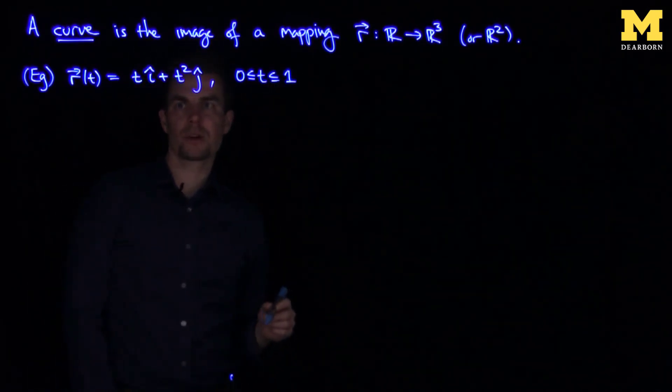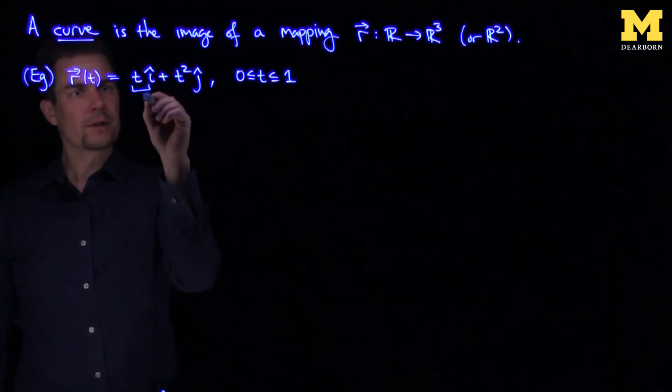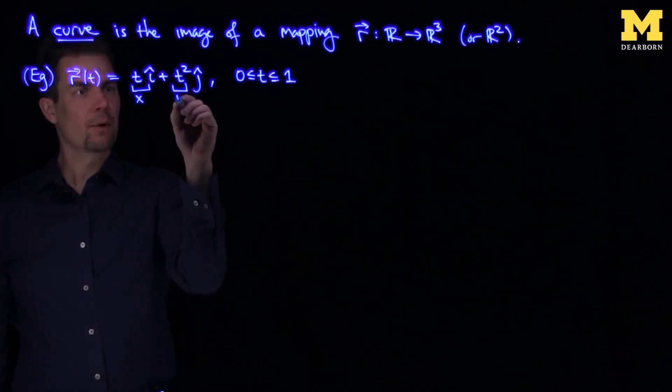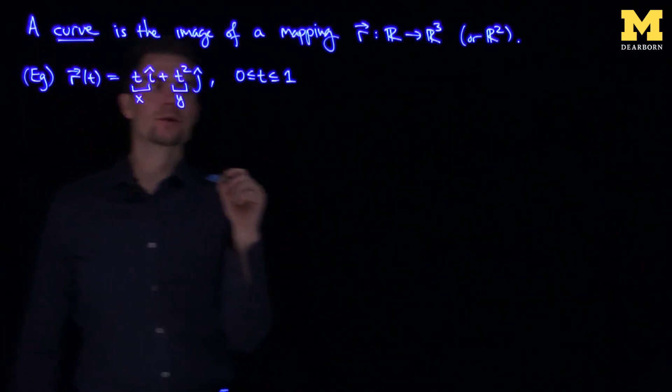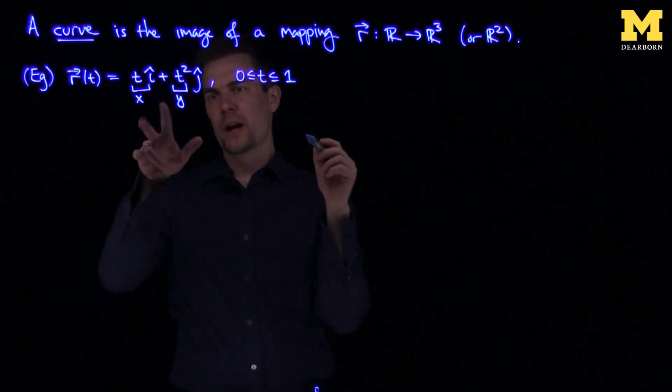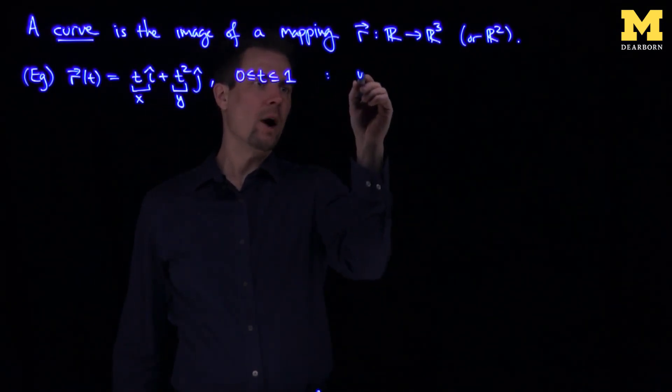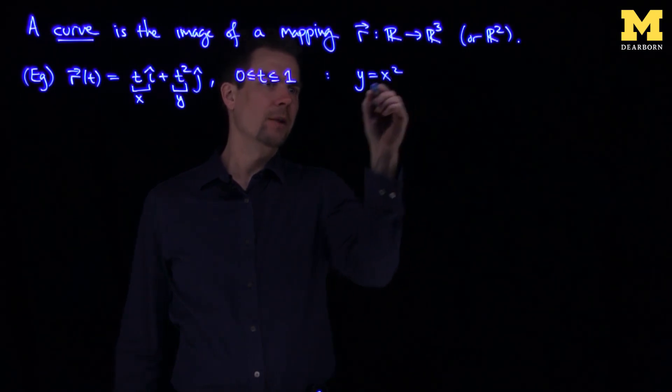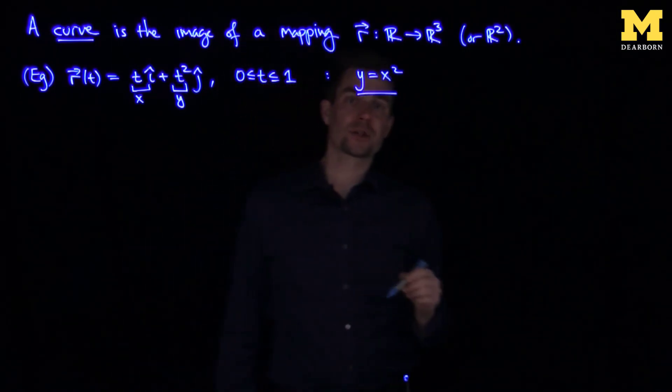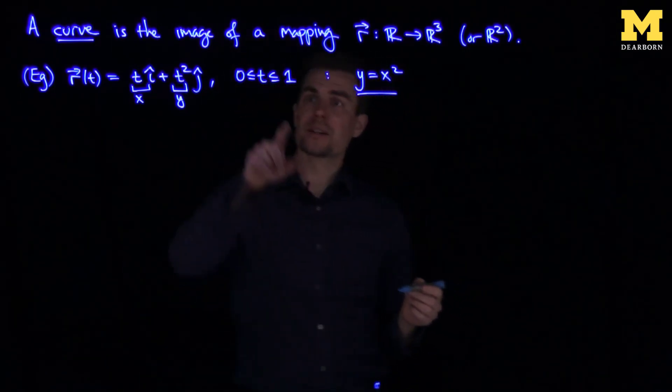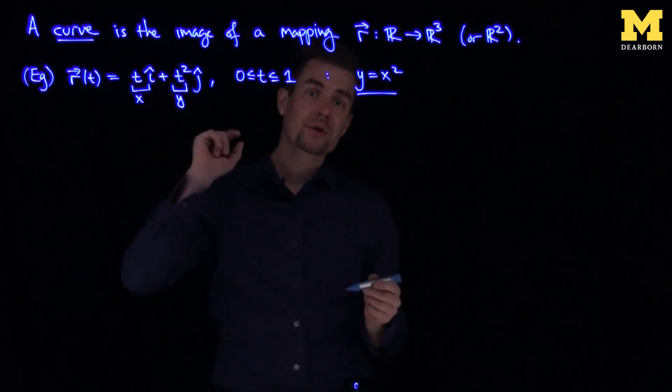Let's get our hands around what this curve looks like. The i component is our variable x, and our j component is our variable y. So for this curve, y is equal to x-squared. Now we know the graph of y equals x-squared is a parabola, but I've restricted the range of t, so that restricts the range of x.